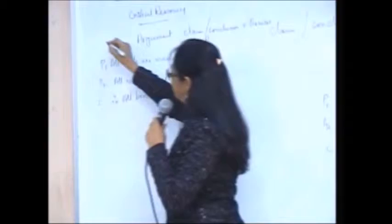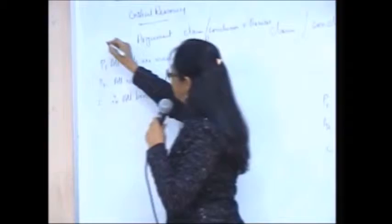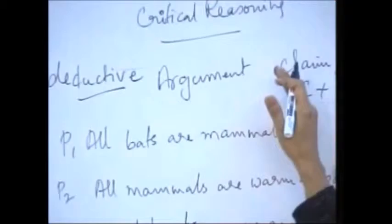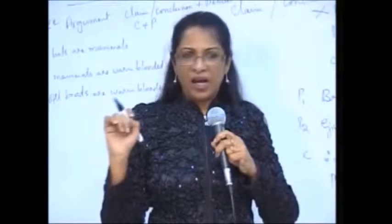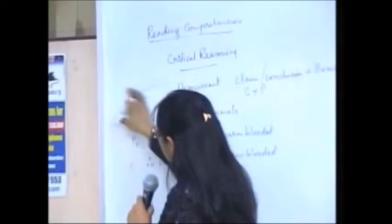These are called deductive arguments. Deductive arguments have only two components: the C plus the P — the claim or conclusion plus the premises. The arguments that come on critical reasoning, on GRE analytical writing, as well as many times in their short passages, are not so simple. The arguments that you get on GRE are mostly what we call inductive.